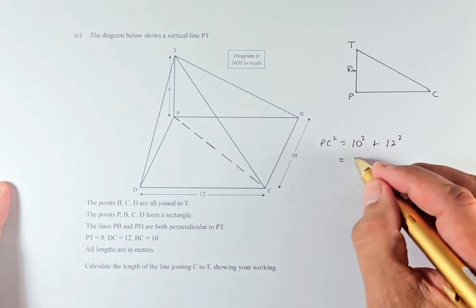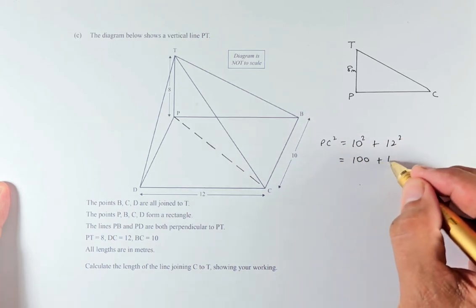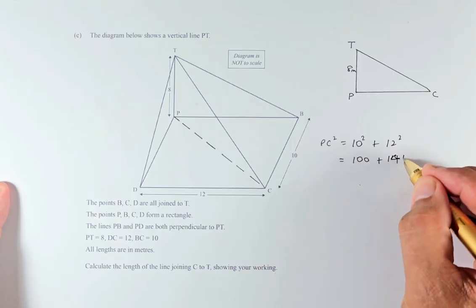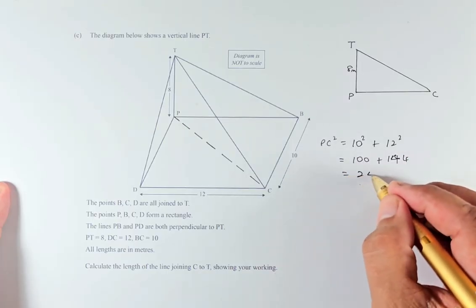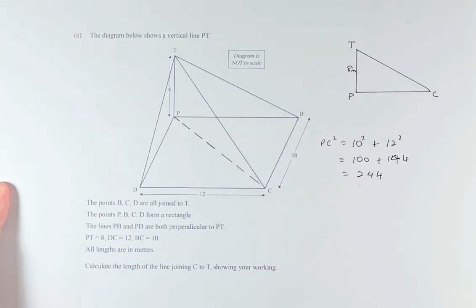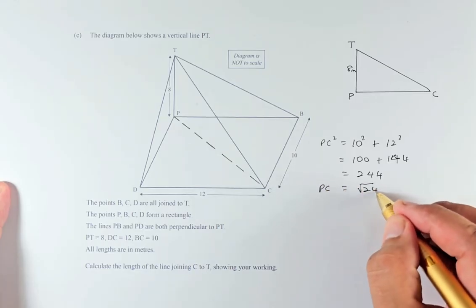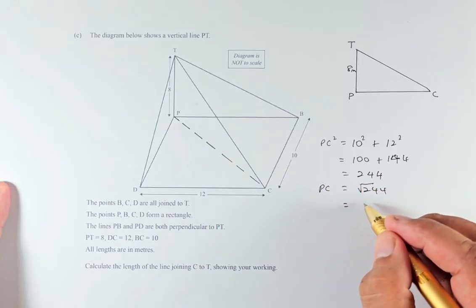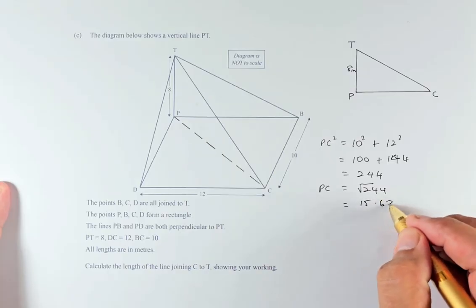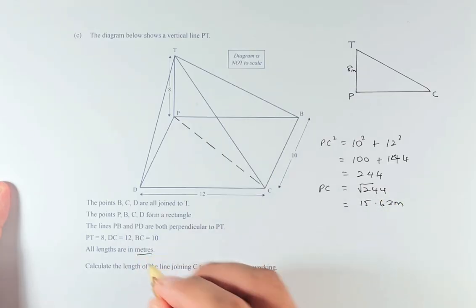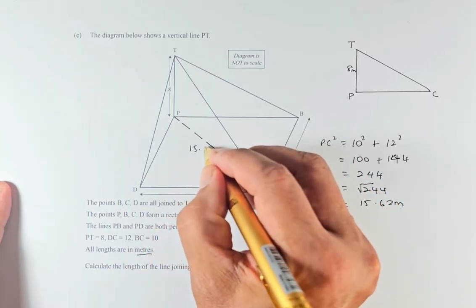So 10 squared is 100, and 12 squared is 144. And the total is going to be 244. So to get PC is just the square root of 244. The answer is going to be 15.62 meters because all lengths are in meters. So we know that PC is 15.62 meters.